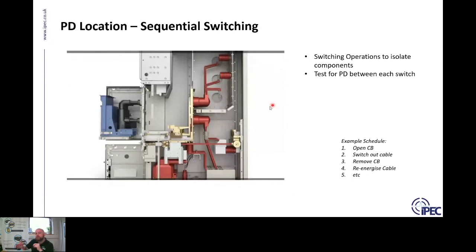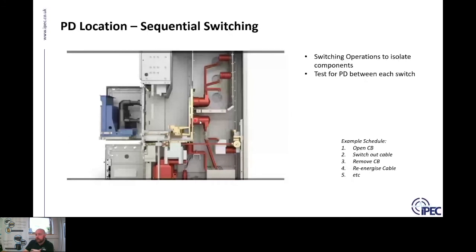For example, if PD is detected on the switchgear, the first step might be to open the circuit breaker. All components remain energized and we retest — most likely we will still see the PD. Then we switch out the cable. With the circuit breaker still connected, that point and half of the circuit breaker remain energized. If the PD is gone after retesting, we know the PD must be in the components that are now isolated.